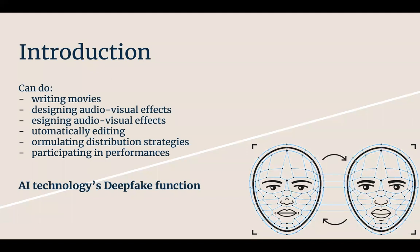First, to introduce AI applications in the film industry — it can now complete work for many aspects of film production. For this project, I hope to explore the impact and application of AI deepfake technology on the film industry. This is an emerging technology that can make film production faster and more convenient. I researched many ways to explore how to accomplish it.